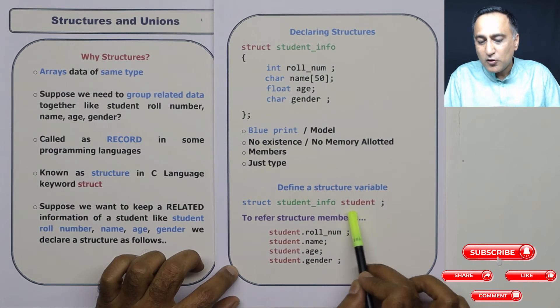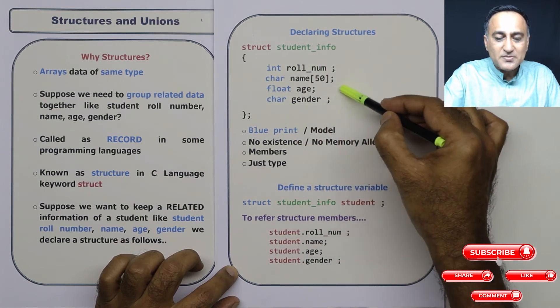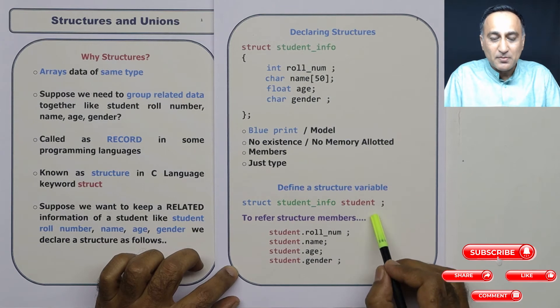Now a variable called student is going to be created, which will have all these particular items as a part of it. So student is the first variable where memory is allocated.